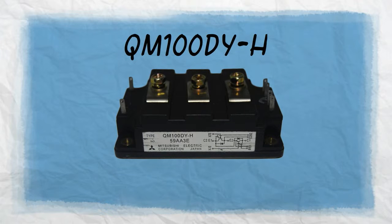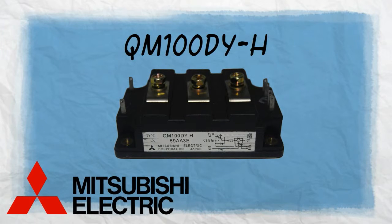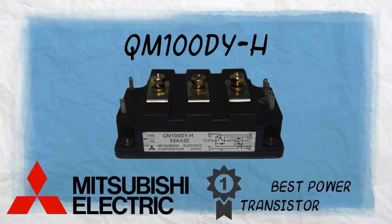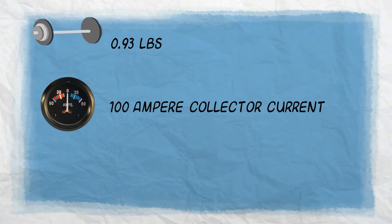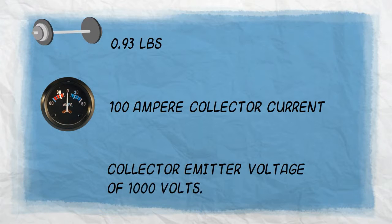QM100DYH prides itself for being a Mitsubishi product, a company known for manufacturing some of the best power modules today. It weighs 0.93 pounds with a 100 ampere collector current and a collector-emitter voltage of 1000 volts.